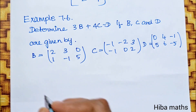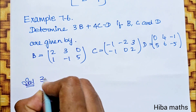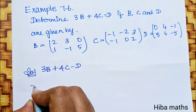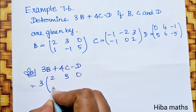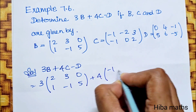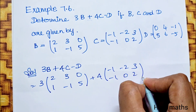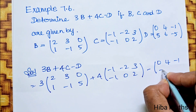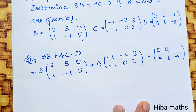So all the numbers. Solution: 3B plus 4C minus D. 3 into [2, 3, 0, 1, minus 1, 5], plus 4 into [minus 1, minus 2, 3, minus 1, 0, 2], minus D: [0, 4, minus 1, 5, 6, minus 5].